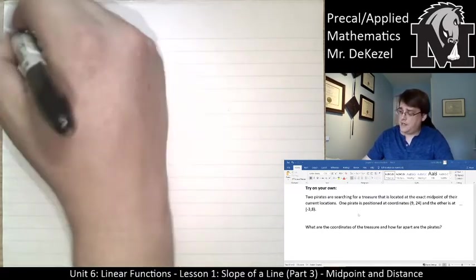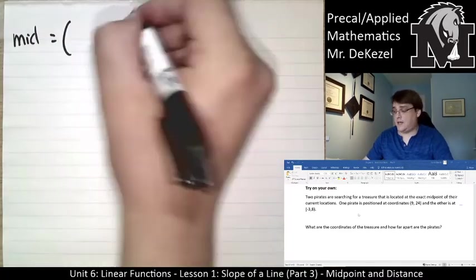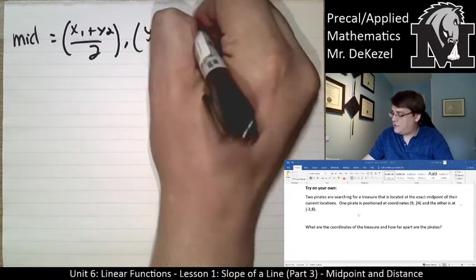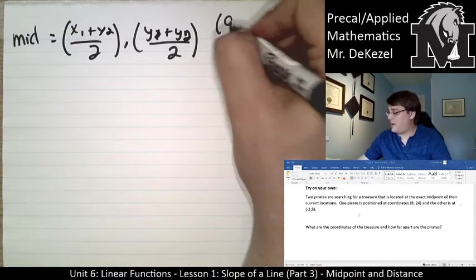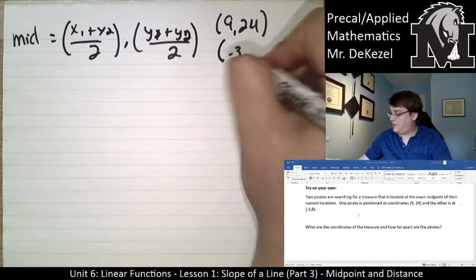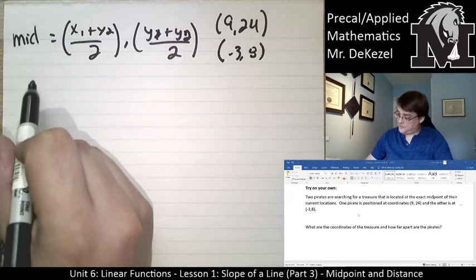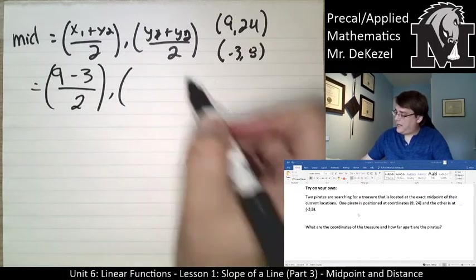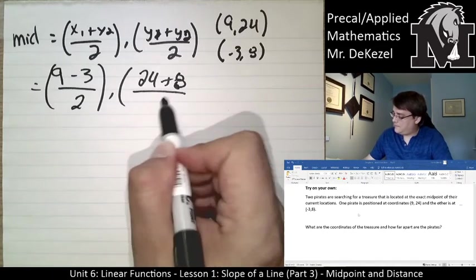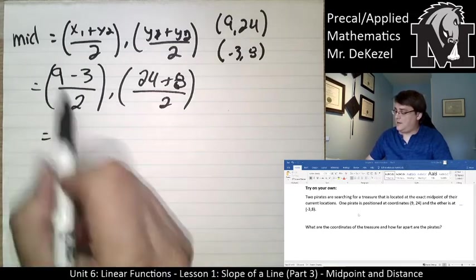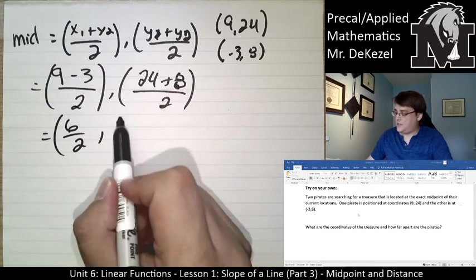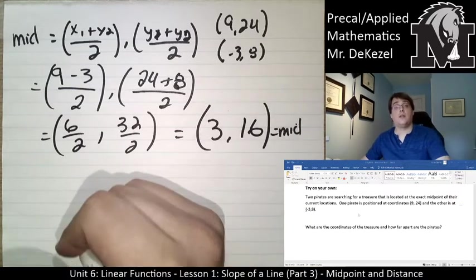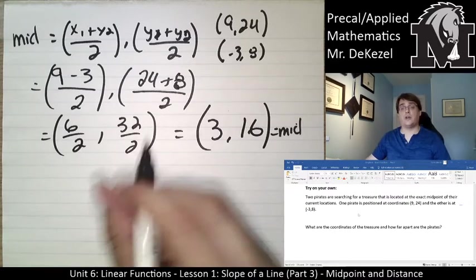Well, the coordinates of the treasure would be the midpoint. So the midpoint is equal to the x value average, so x1 plus x2 averaged, and then the y values averaged. So we have the points (9, 24) and (-3, 8). Let's average the x values and the y values. x values: we have 9 minus 3, and we have 24 plus 8, which means that our midpoint is - that's 6 divided by 2, and 24 plus 8 is 32 divided by 2. So our midpoint is (3, 16). That is the midpoint. That is where the treasure is located if you go to that coordinate on that plane.